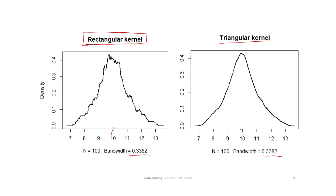We also observe that the mean of both estimates is around 10, consistent with the normal distribution we sampled from. However, the mode is slightly lower than 10 for the rectangular kernel estimate, while for the triangular kernel it is quite close to 10. In both cases the density function is fairly symmetric, but the triangular kernel provides a better estimate.